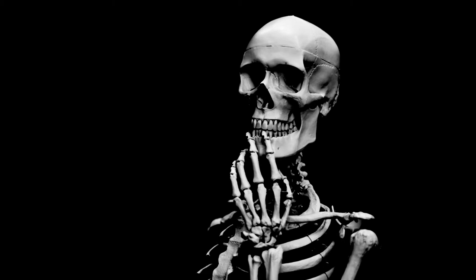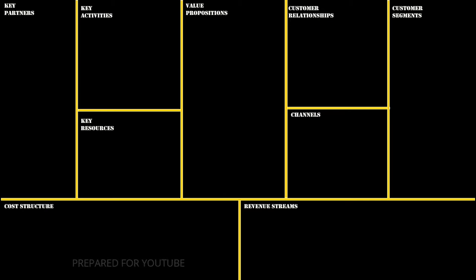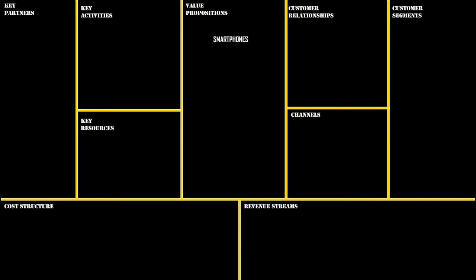Now let's move on to examples — these are absolutely hypothetical. First example: our value proposition is smartphones, but specifically for people aged over 60. These smartphones will be sturdier, have more battery power, be user-friendly, and include only basic options like calling, video chat, and maps. The channel would be both online and offline.